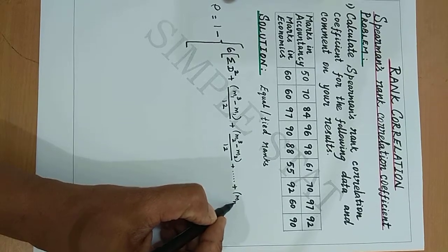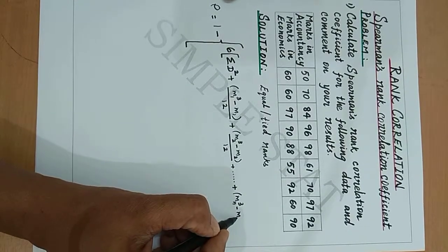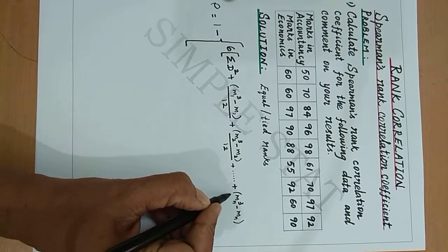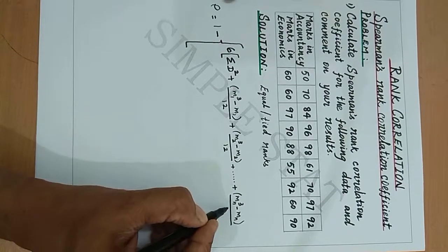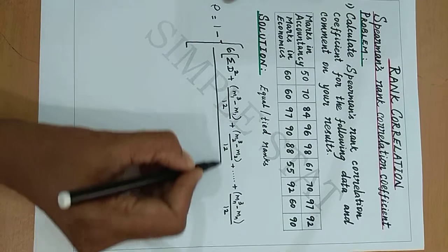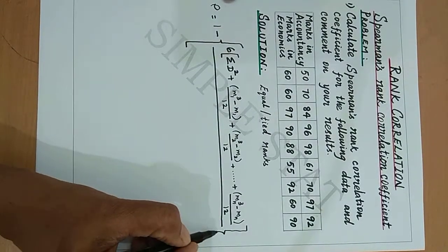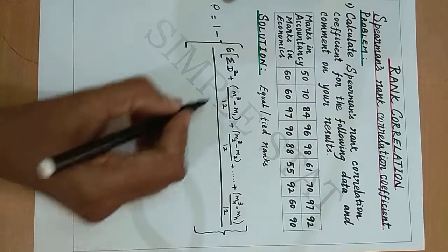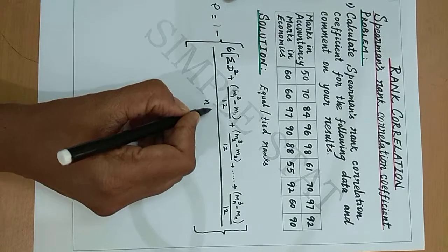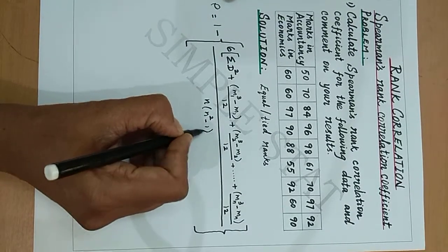The correction term continues for each tied group: plus (MN³ − MN)/12, all divided by N into N² minus 1.